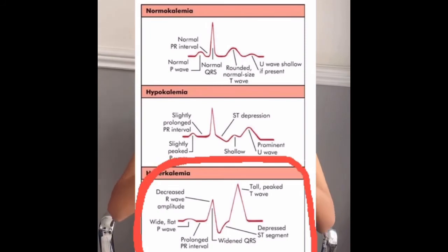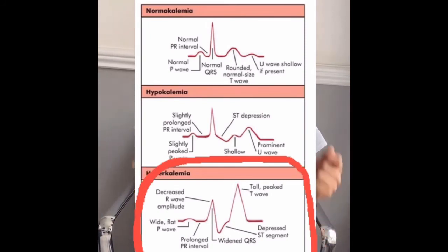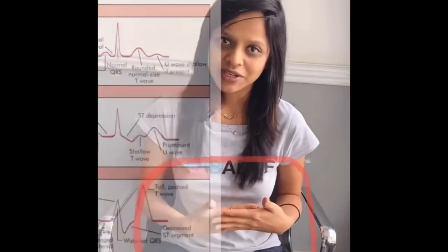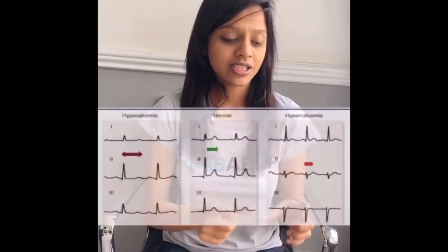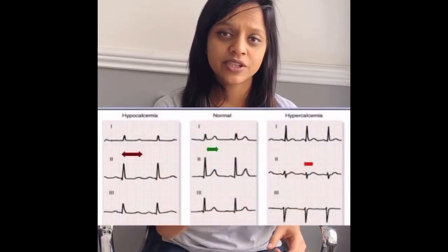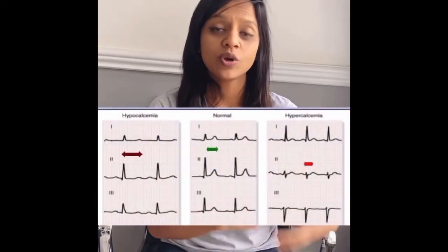That is very important — if you see that wave, directly give the patient calcium gluconate IV to protect the cardiac membrane. Now moving on to calcium: look at the QT interval, because the more calcium, the faster the impulses will travel.